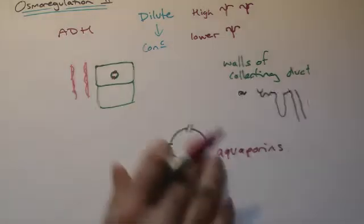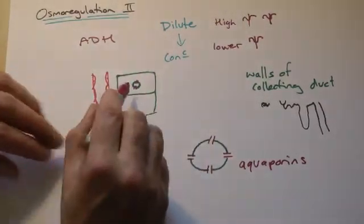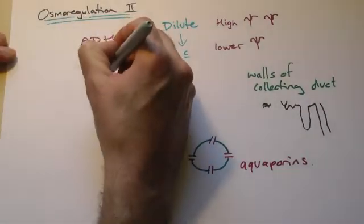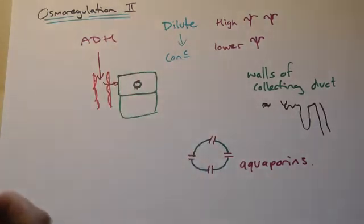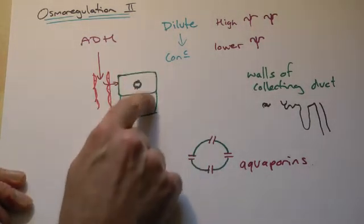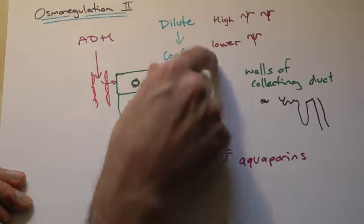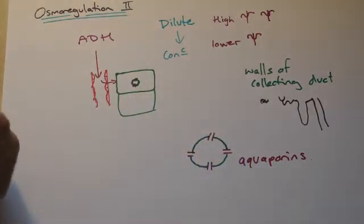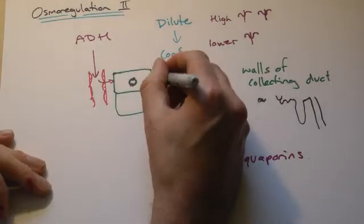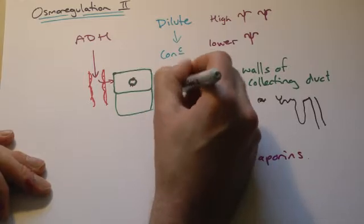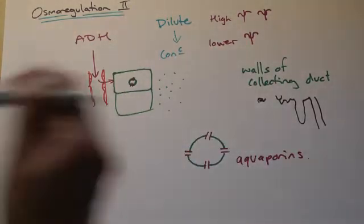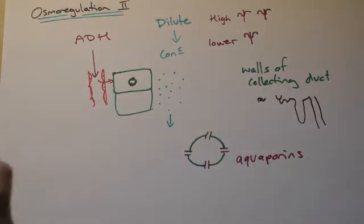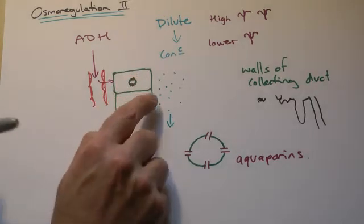Now it turns out that normally this is going to diffuse across the membranes of this wall here, so this is where our filtrate would be coming down, our liquid, mainly urea and water of course. That's all that's left now, some salts. It would be flowing down here, past here. The walls of the collecting ducts are pretty much impermeable to water.